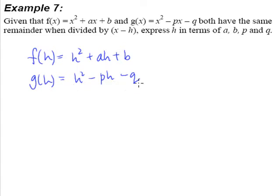So this is also the remainder when g(x) is divided by x minus h. What do we know about this remainder? Well, we know that these two remainders are the same. Here we go, they're the same.